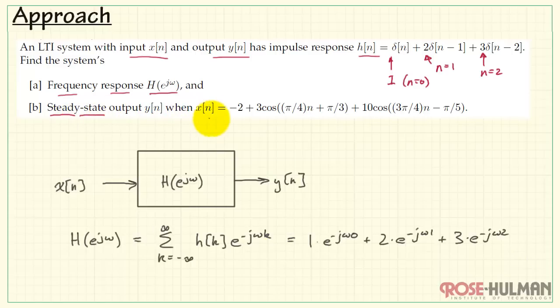In part b, we are looking for the steady state output when we have the given x of n. We see that there are three components. We have a DC component. This occurs at omega equals 0. We have one sinusoidal component with frequency pi over 4 radians per sample, and then we have a second sinusoid with frequency 3 pi divided by 4 radians per sample.